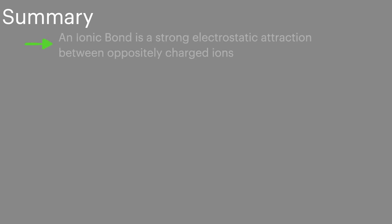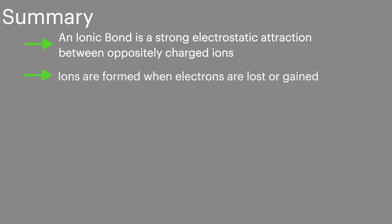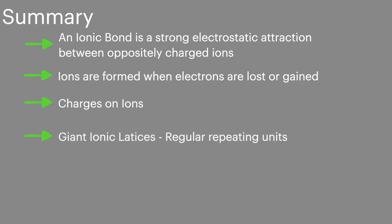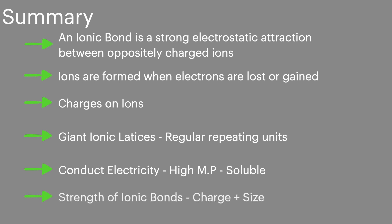To summarize ionic bonding: an ionic bond is a strong electrostatic attraction between oppositely charged ions. Ions are formed when electrons are lost or gained. You need to learn the common charges for different ions. Giant ionic lattices are regular repeating units — they can conduct electricity when liquid, they have a high melting point, and most of them are soluble. The strength of an ionic bond depends on the charge and the size of the ions.